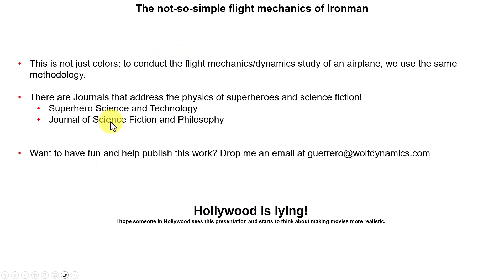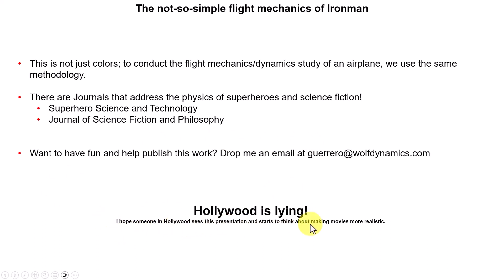As you can see, we start in horizontal flight, then at one point we turn on the control system and it goes into the vertical position — that's the hovering state. The main takeaway is this: to conduct the flight mechanics dynamic study of an airplane we use the same methodology — just a different geometry where we need to balance everything. There are even journals that address the physics of superheroes and science fiction. I really hope someone from Hollywood sees this and puts a little more realistic behavior into the movies, because Iron Man — regardless of the conditions — is not flying.